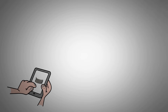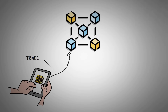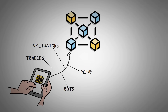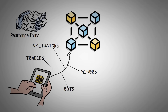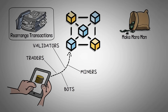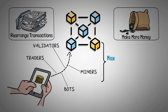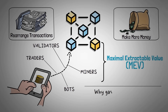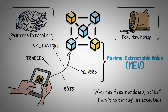What if I told you there's a hidden game happening every time you send a transaction on the blockchain? A game where traders, bots, and even validators or miners fight to rearrange transactions in a way that makes them the most money, at your expense. This game is called Maximal Extractable Value, or MEV, and if you've ever wondered why gas fees randomly spike or why your trade doesn't go through as expected, MEV might be the reason.